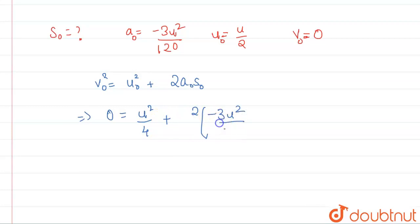a is -3u²/120, and basically we also have s. s is unknown, so we'll leave it like this. So finally what we'll have? We'll have u²/4, and this minus and minus will get cancelled. So we'll remove the minus and this will be 3u²/60, and this will be s₀.